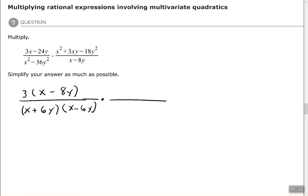In the second numerator we have a trinomial. We don't have a GCF, so I want to see if I can find factors of negative 18 that will give me a sum of positive 3. So how about positive 6 and negative 3?